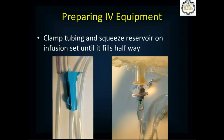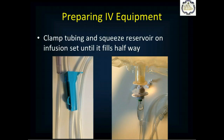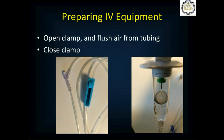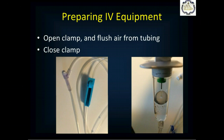Close your roller clamp to keep fluid from flowing through. Squeeze the drip chamber and when you let go, it will fill about halfway — leaving enough space to watch the drips falling through to gauge flow rate while keeping air out. Once the drip chamber is filled halfway, open your roller clamp and let IV fluid flush all the air out of the tubing. Once fluid drips out the far end, close the roller clamp again and your IV set is prepped for use.